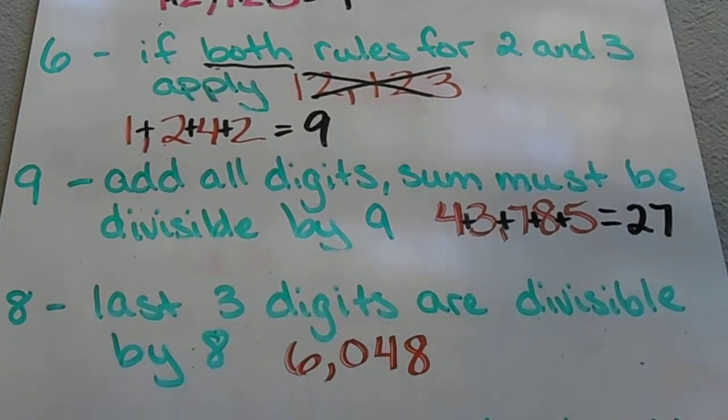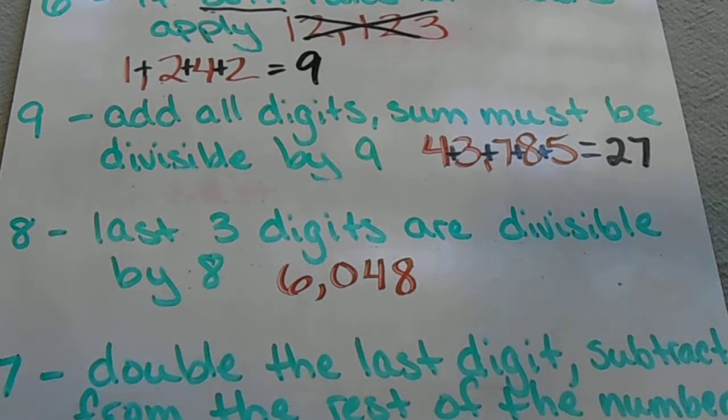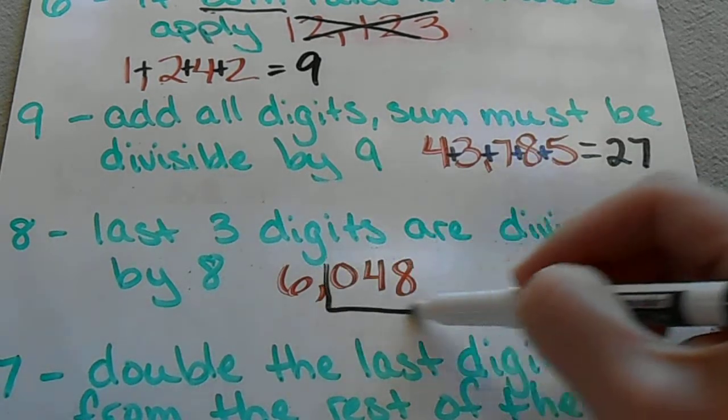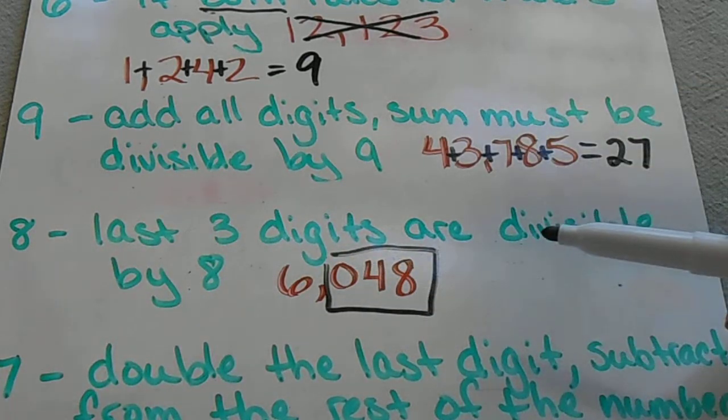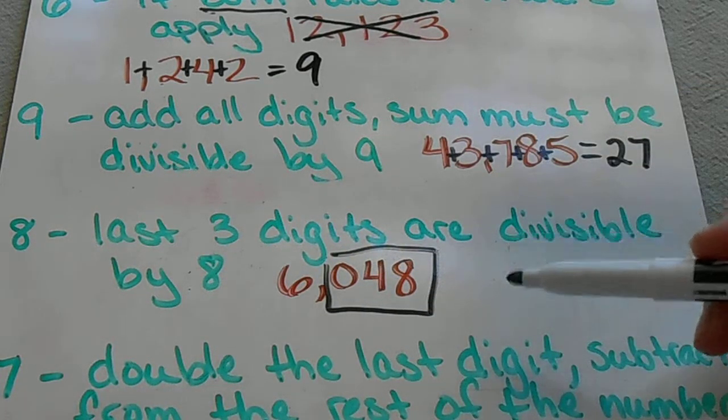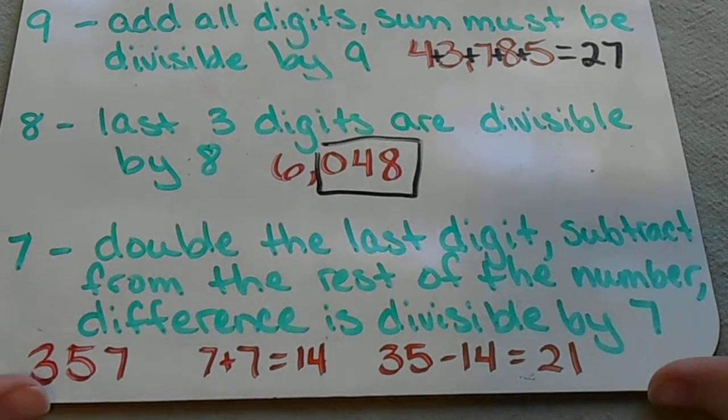These last two numbers are a little bit more tricky, a little bit more involved. For 8, you have to just look at the last 3 digits, and if the last 3 digits are divisible by 8, then the whole number can be divided by 8. And then 7 is the trickiest of all.